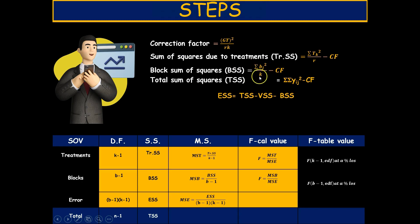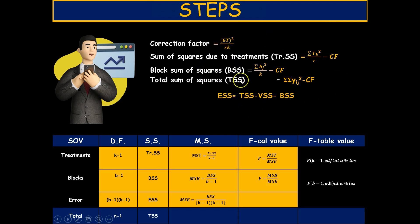For the block sum of squares, get the total of each block, square it, divide by the number of treatments, sum them, and subtract the CF. For the total sum of squares, square each individual observation, sum them, and subtract the CF. The error sum of squares is obtained by subtracting the treatment SS and block SS from the total SS. Then place all values in an ANOVA table with three sources of variation: treatments, blocks, and error.